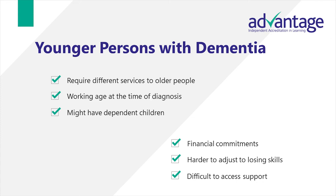Diagnosis at an early age can be incredibly difficult. People require different services to those who are older. People may be of working age at the time of diagnosis. They may have dependent children. They might have financial commitments. They find it harder to adjust to losing skills and can find it more difficult to access support.